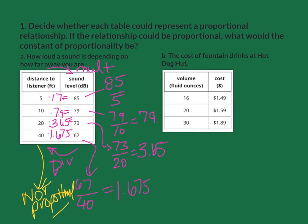The next one, the cost of the fountain drinks at the hot dog hut. Left to right we multiply, right to left we divide. That is the same every single time. So if I were to do 1.49 divided by 16, I would get 0.09.